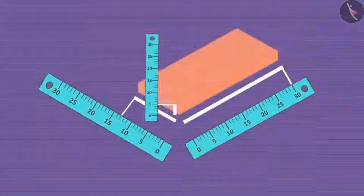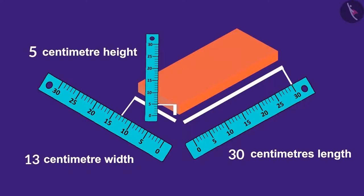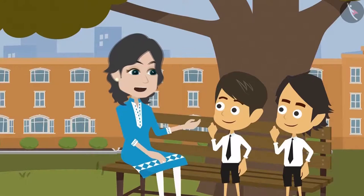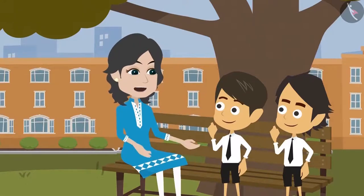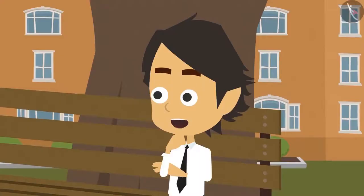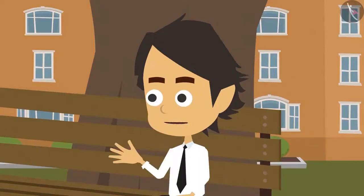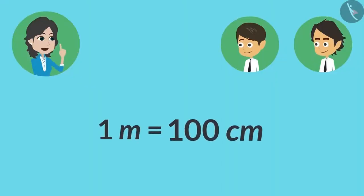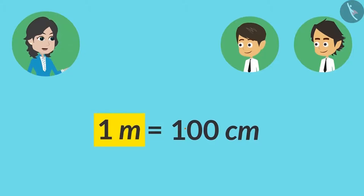We measured a brick in centimeters. Can we measure a brick in meters too? No, a brick is small, therefore it cannot be measured in meters. Only those objects whose length is more than 100 centimeters are measured in meters. Because 1 meter has 100 centimeters, or we can also say that 1 meter is equal to 100 centimeters.